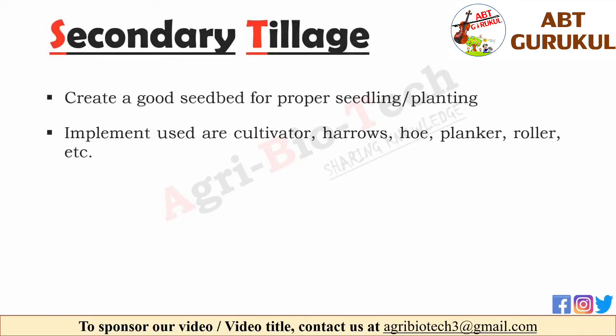The second type of tillage is secondary tillage. These tillage operations follow primary tillage to create a good seed bed for proper seedling and planting. Secondary tillage implements include cultivator, harrow, planker, roller, etc.